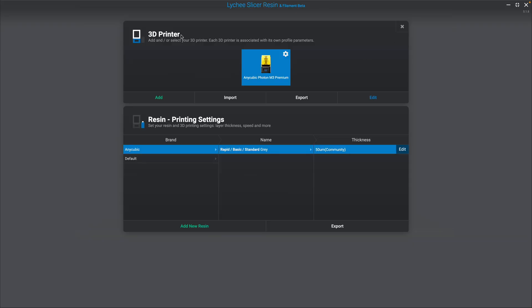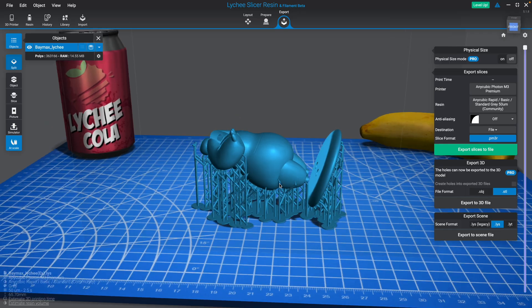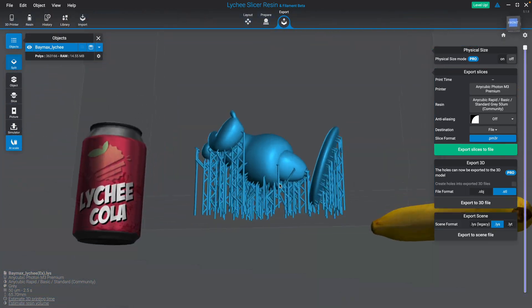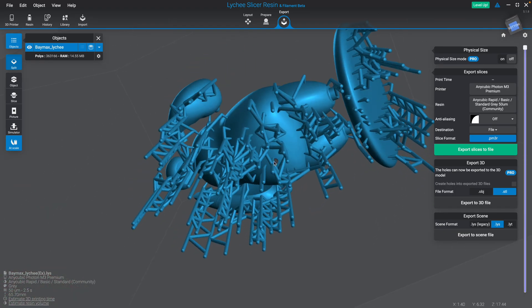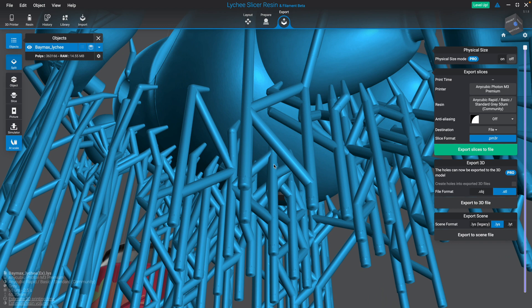Okay, so here we're in Lychee Slicer, and I have my printer. I chose the basic gray resin settings that I guess the community uses. So I'll just move it around. It's a little bit smaller now. I have supports. I made some holes in the butt area, although I'm not sure how deep they're supposed to be.